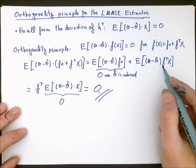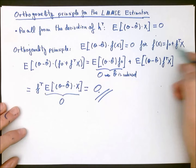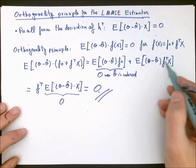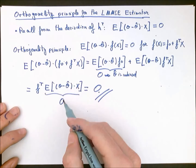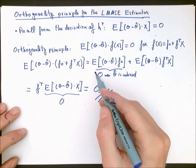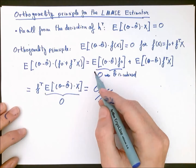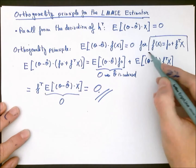Note that the orthogonality principle may not hold if the function is not affine. For instance, if the function were quadratic or exponential in x, we would not be able to isolate the term we know is zero, and we could not guarantee that the expectation of the estimation error times a nonlinear function of x is zero. This is only true for the nonlinear MMSE estimator. For the linear MMSE, the orthogonality principle is only fulfilled for affine functions of x.